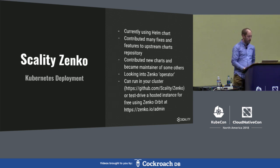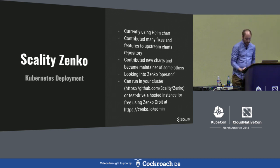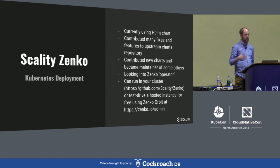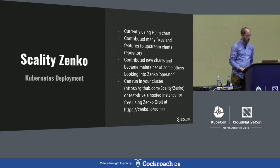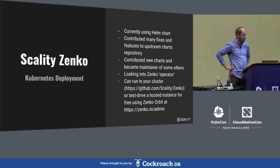For how we deploy our solution — Zenko on Kubernetes — we decided early on to start using Helm charts, partially because it allows us to reuse much of the functionality that exists in various upstream charts. As part of Zenko, for example, we use MongoDB and Kafka. We have contributed many fixes to the various upstream charts we use. We even became the maintainer of Redis HA and maybe some other ones.